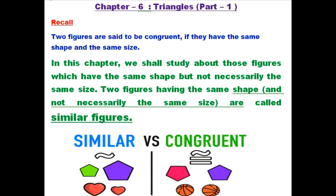There are six parts in a triangle: three sides and three angles. In lower class we might have studied about congruent figures. Just recall: two figures are said to be congruent if they have the same shape and the same size. This chapter we are going to study about figures which have the same shape but not necessarily the same size.